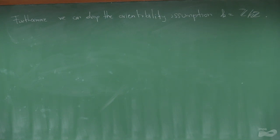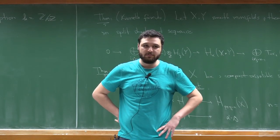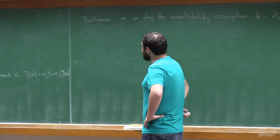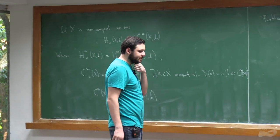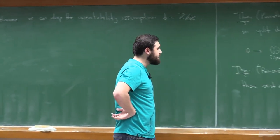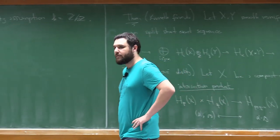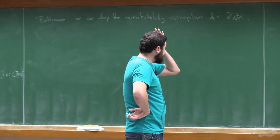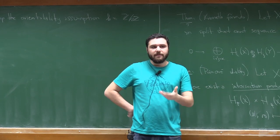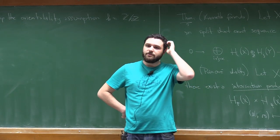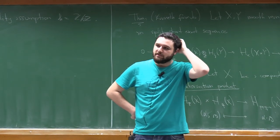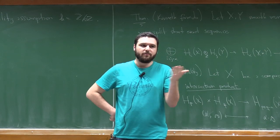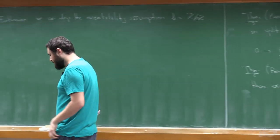Now I want to introduce a result due to Eilenberg and Steenrod. Maybe this result you haven't seen in a regular course. It proves that you can define a singular homology theory in an axiomatic way — you don't need to construct it necessarily. You just give a list of axioms, and from these axioms you can derive the whole theory.